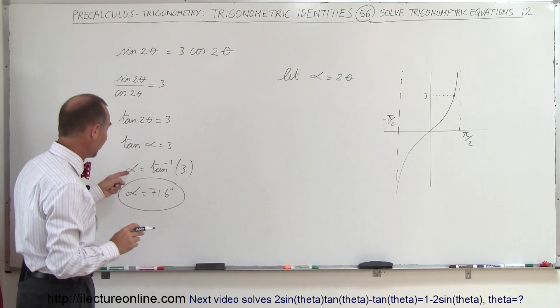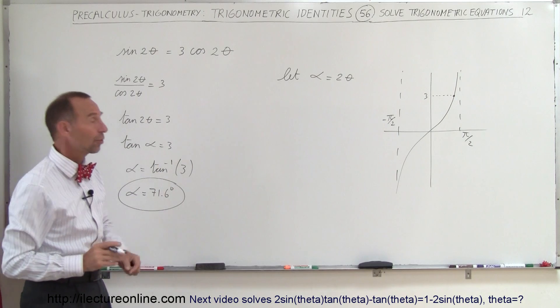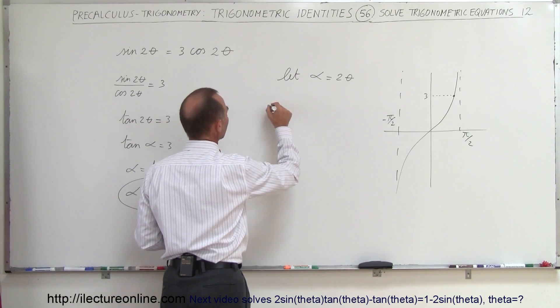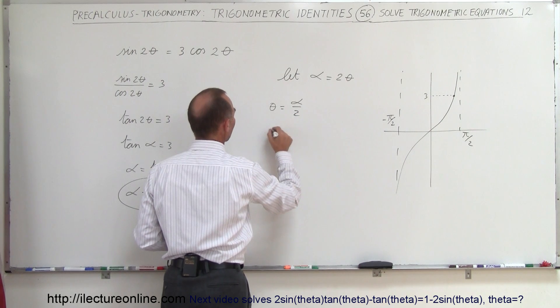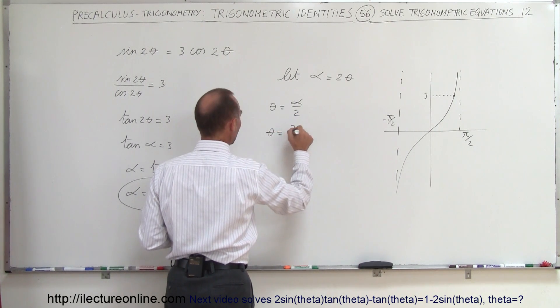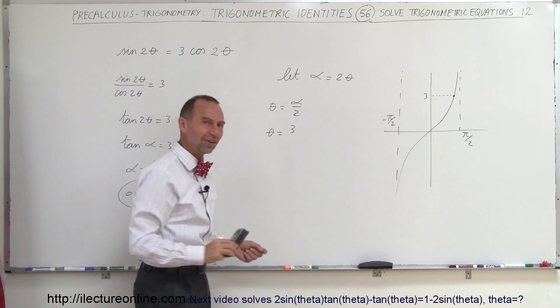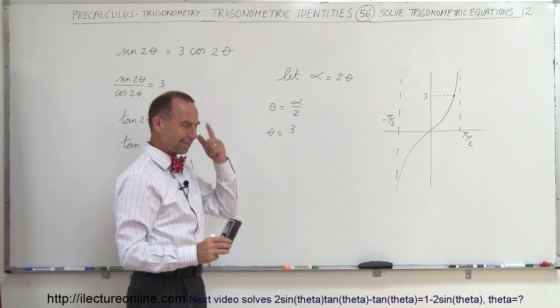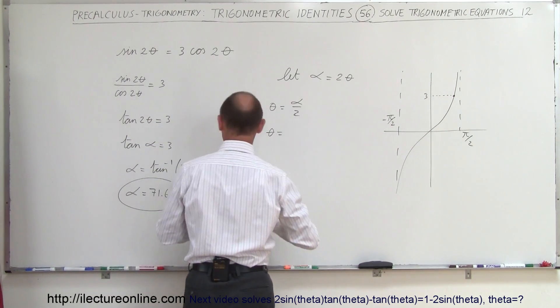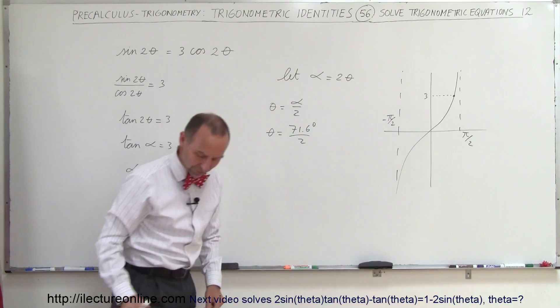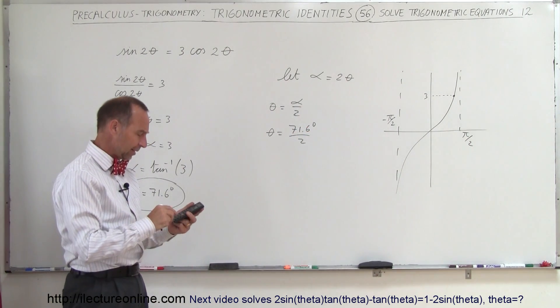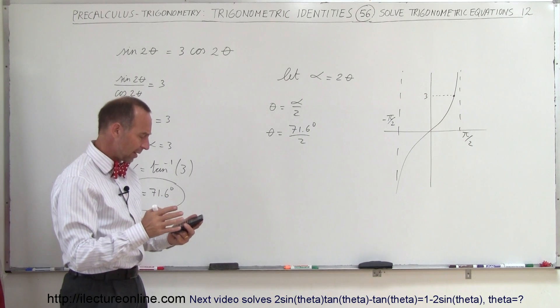But of course that's the answer for α, that's not the answer for θ. So θ equals α divided by 2. In this case θ is going to equal... that's strange, I said 70 and I write a 3. I don't know why that happens sometimes. Anyway, 71.6 degrees divided by 2. Let's take the calculator, divide by 2 just so I don't get a rounding error.